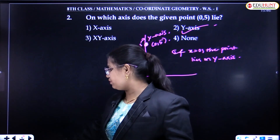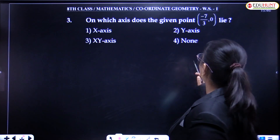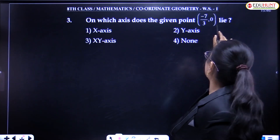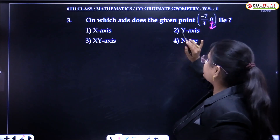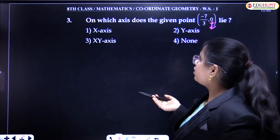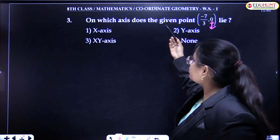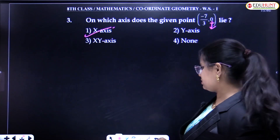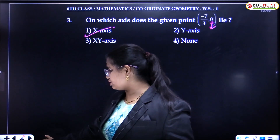Next question: on which axis does the given point (-7/3, 0) lie? Here the Y coordinate is 0. If Y is equal to 0, the point lies on the X axis. So (-7/3, 0) lies on the X axis.